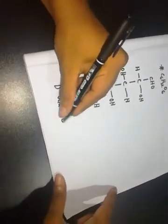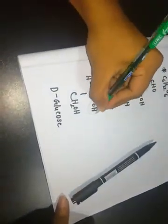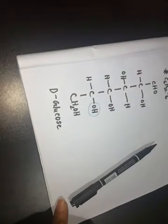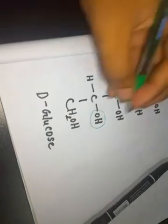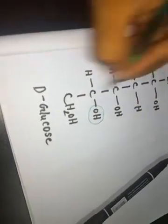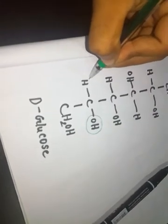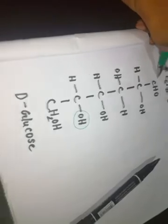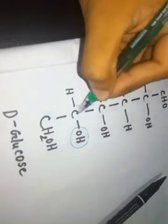So I am going to assign OH and H for each carbon. I will give OH and H. So it is D-glucose. For position 3, we assign OH and H. Then we can give OH and H for the remaining positions.